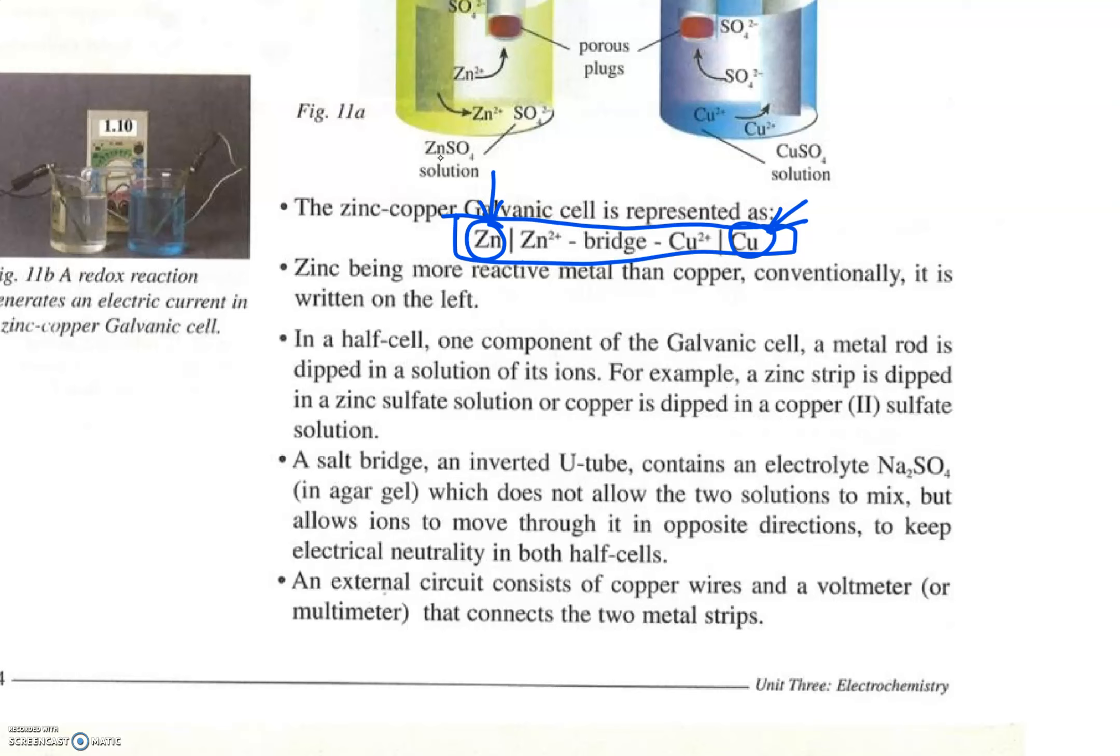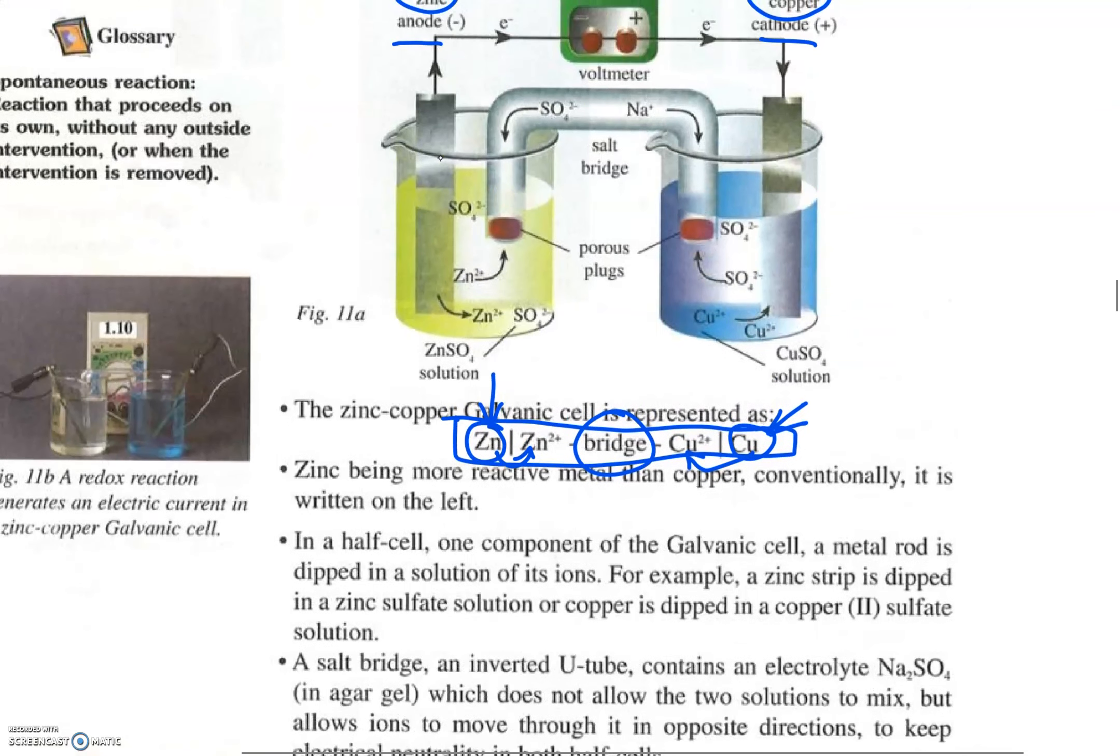Next to each of them we write the corresponding ion, and between we write bridge. If you remember, the bridge contains an anion and a cation, and the anion goes to the anode and the cation goes to the cathode.